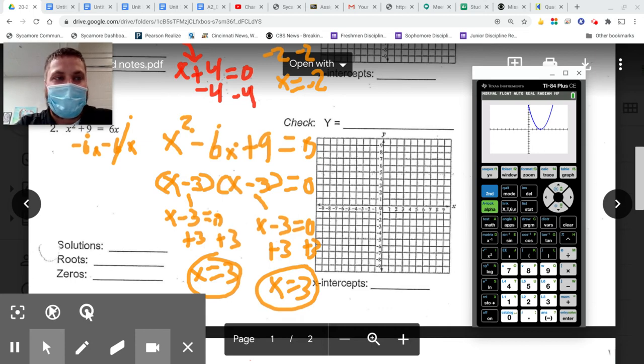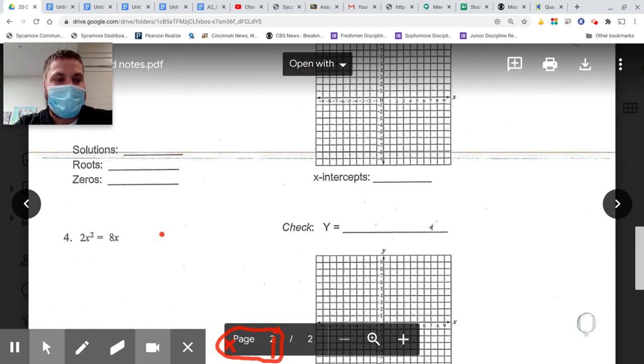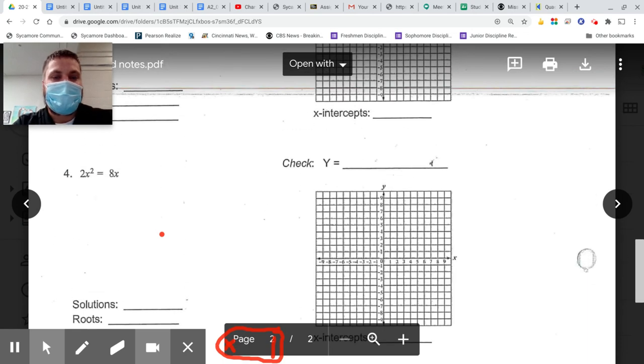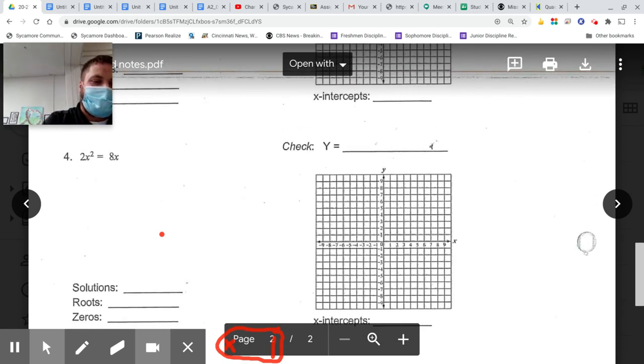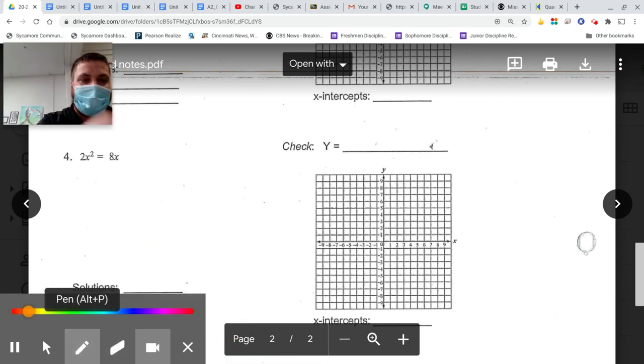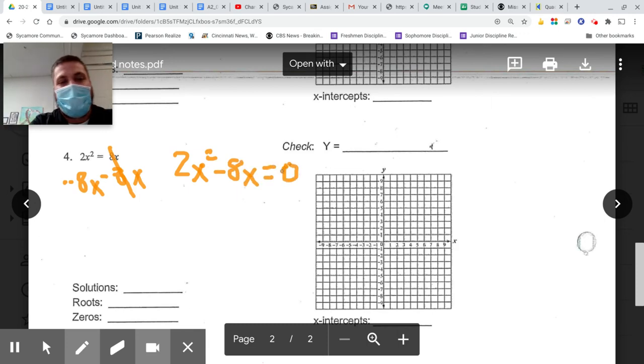Let me hand pick one more here if I can find one that appears to be a little bit different. Let's go to number four. This will be the last one we do. All right, so again, not everything is going to be a trinomial or what they call an easy trinomial. My rules still apply though. I need to make this say equals zero, so I got 2x squared minus 8x equals zero.